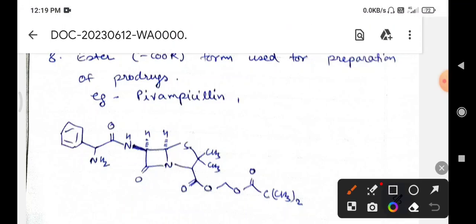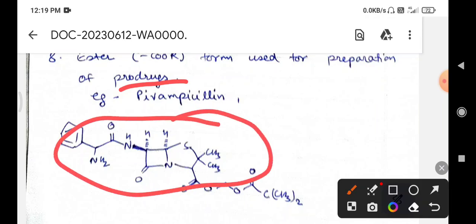For example, pivampicillin. This is the prodrug of ampicillin, and it enhances the oral absorption of the drug. Other examples include talampicillin and becampicillin.